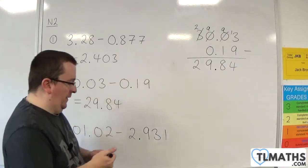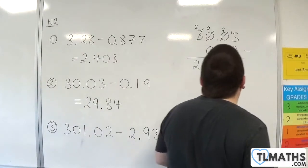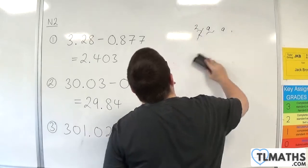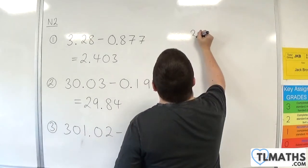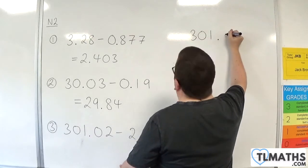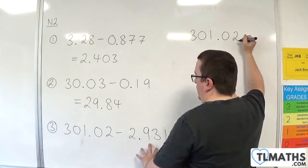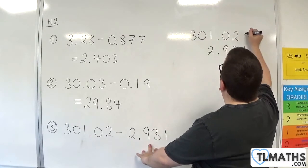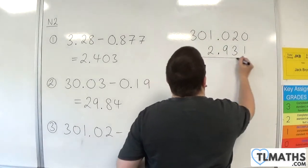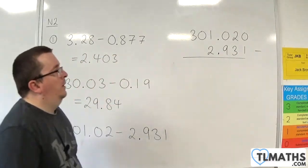Okay, so let's see another example of this. We have 301.02 take away 2.931. Fill in any gaps with zeros, and then we're ready.